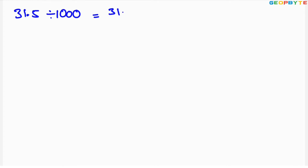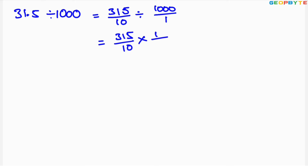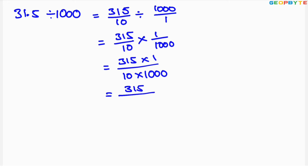Next, 31.5 divided by 1000. Converting to fractions: 315 by 10, divided by 1000 by 1. Finding the reciprocal: 315 by 10 into 1 by 1000, which equals 315 into 1 by 10 into 1000, giving us 315 by 10000.